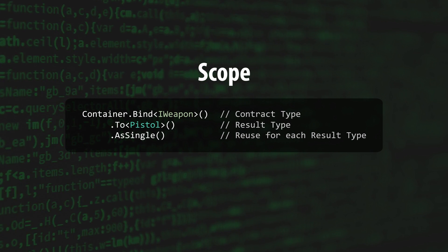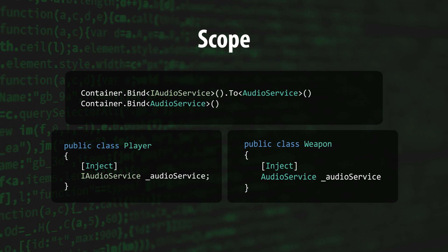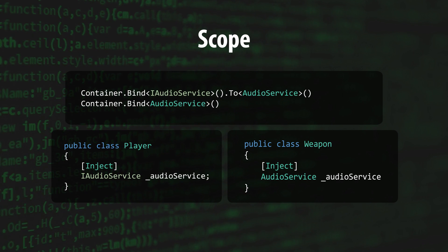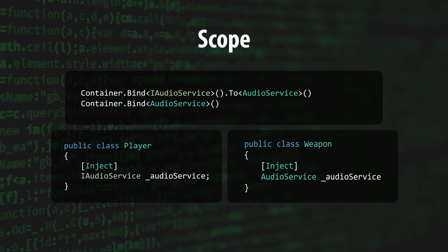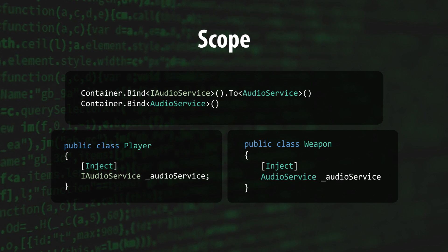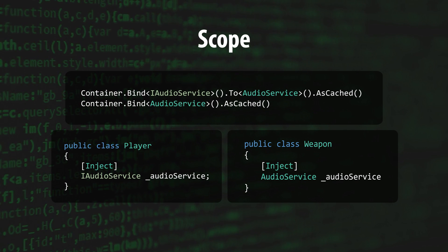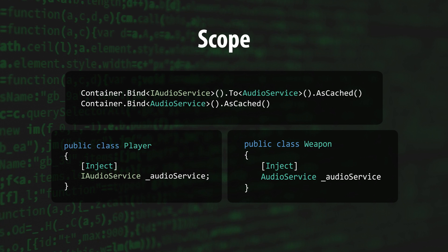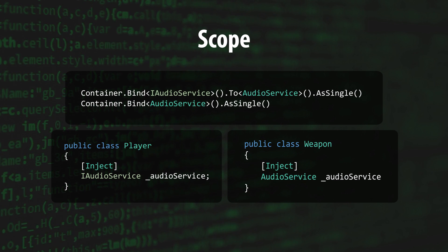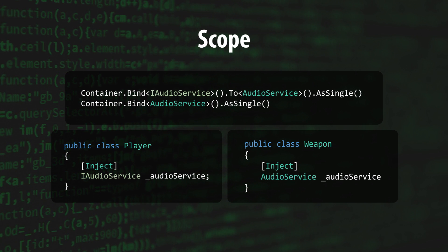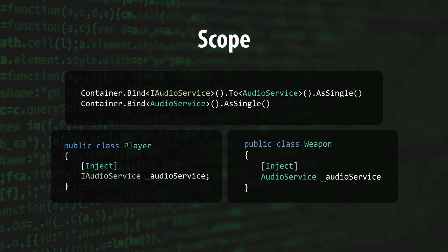AsCached and AsSingle appear to do the same thing, so here's an example to illustrate the difference. Take these two classes, Player and Weapon. Player depends on an instance that derives from iAudioService, and Weapon depends on an instance of the AudioService implementation. We'll need to define a binding for each of these contract types. If we use a cached scope, then the container will create two instances of AudioService — one for each contract type, which are iAudioService and AudioService. But if we use a singleton scope, then the container will only create one instance of AudioService. You'll likely be using AsSingle for most of your bindings, and resorting to AsTransient and AsCached for special cases.